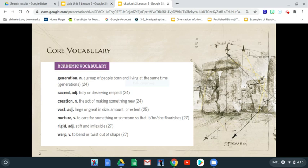Your next vocabulary word is nurture, which is a verb to care for something or someone so that he, she, or it flourishes. An example is your parents, your mother. They nurture you. They make sure that you flourish and you grow and they nurture and love you.